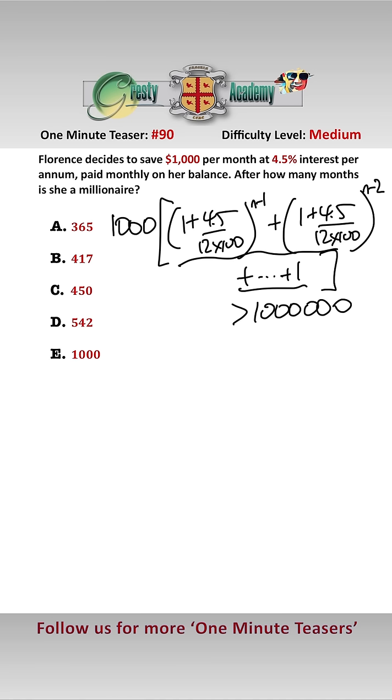This is a geometric series that we can sum. Summing that, we get that (1 + 4.5 over 1200) to the power of n minus 1, over (1 + 4.5 over 1200 minus 1), must be greater than 1,000.